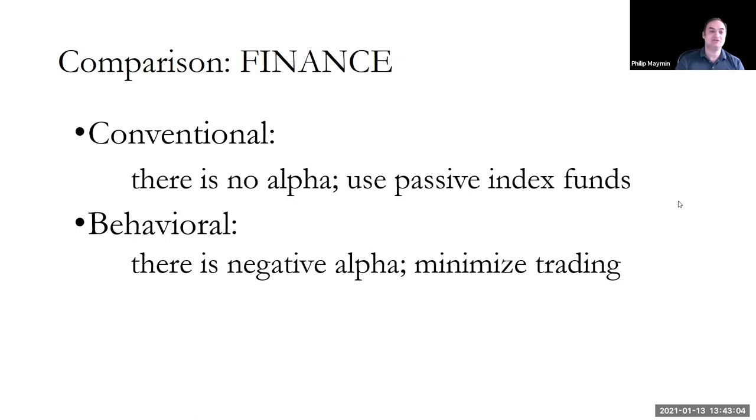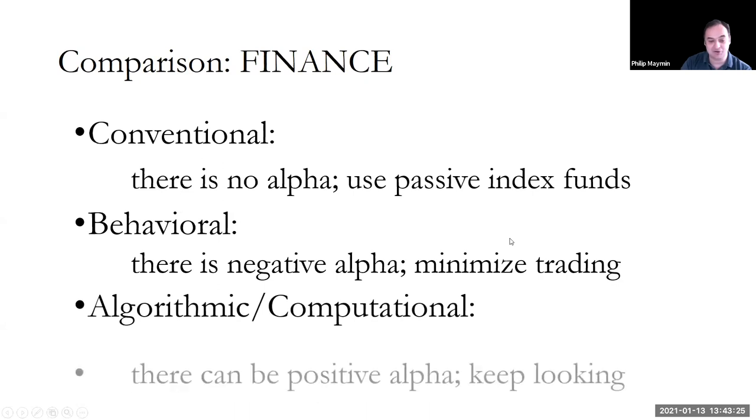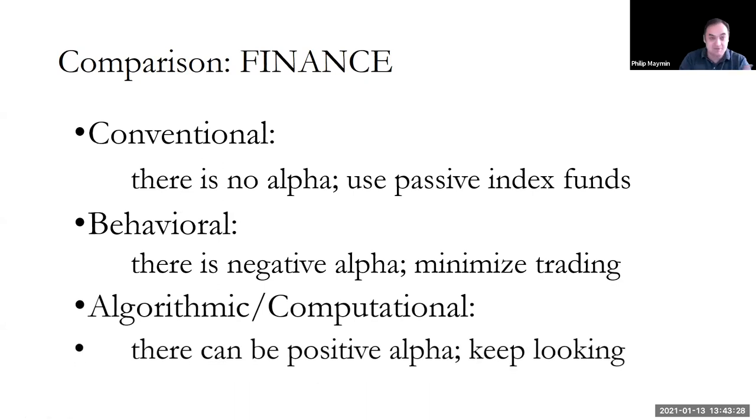How should you invest your money? Put it all on Vanguard, right? Some passive index funds. The behavioral approach would say there's actually negative alpha. You, Mr. or Ms. Retail Investor, are so bad at trading that you generate negative alpha, largely from transactions costs, but even beyond that, you tend to buy when it's the worst time to buy and you tend to sell when it's the worst time to sell. You should just stop trading. So they actually give the same recommendation. For different reasons, but the same recommendation. The algorithmic and computational approach is different though.